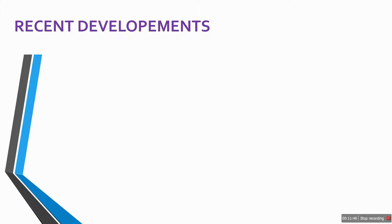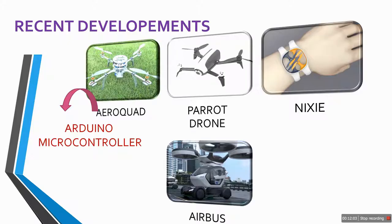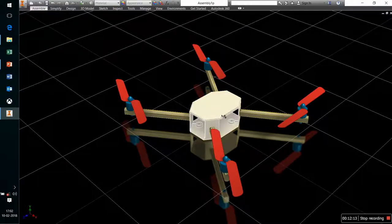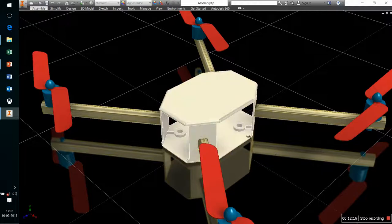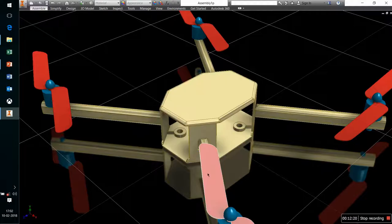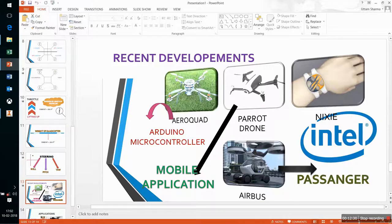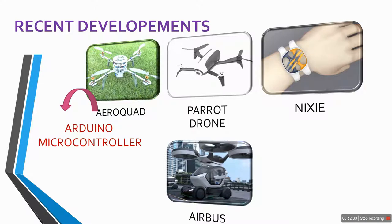Now let's talk about recent developments in the field of quadcopters. Quadcopters are widely used and many companies are working on different projects. One is the AeroQuad — an Arduino-type microcontroller system that runs these quadcopters. A cavity must be provided in the design to accommodate a microcontroller or ESC (electronic speed controls) to run this type of quadcopter.